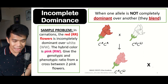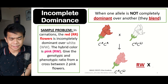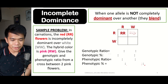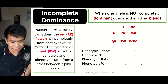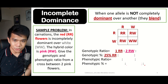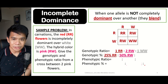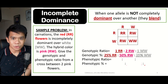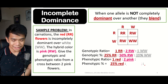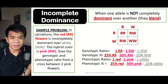What will happen if there is a cross between two pink flowers — RW and RW? Looking at the Punnett square, we get: one RR which is 25%, two RW which is 50%, and one WW which is also 25%. For the phenotype: one red at 25%, two pink at 50%, and one white at 25%.